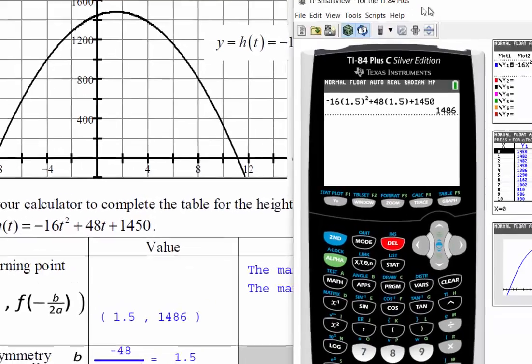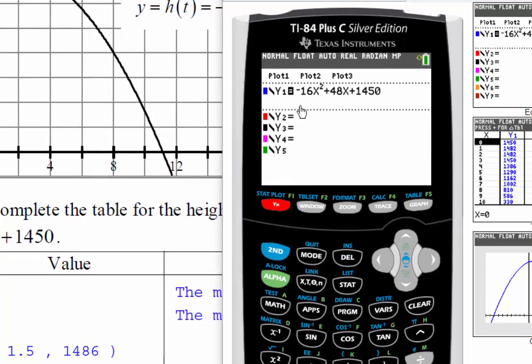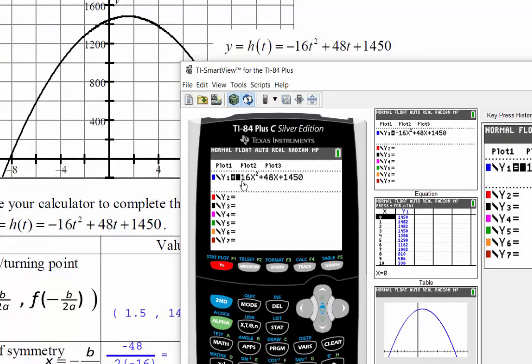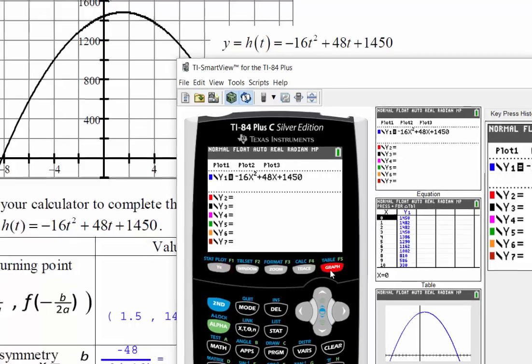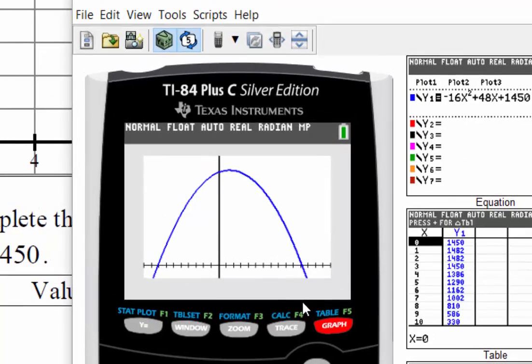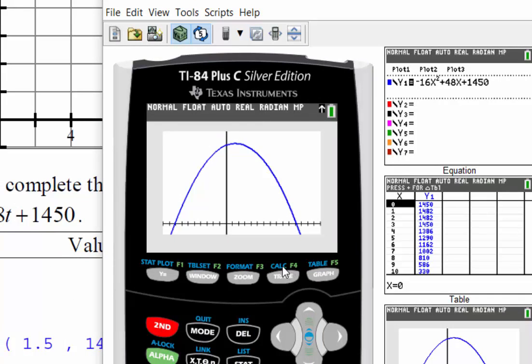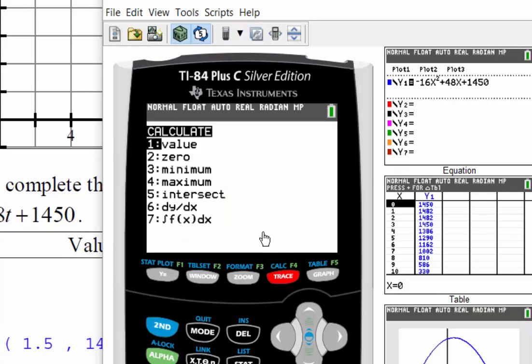If you take your calculator out, and just make sure we still have the equation in there, right? Negative 16 t squared plus 48 t plus 1,450. If I graph this, if you press the second key in your calculator and then the trace key, because above trace it says Calc, we want to calculate the vertex.